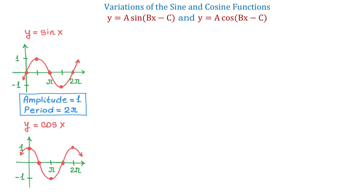In this video, we will talk about variations of sine and cosine functions: y equals a sine of bx minus c, and y equals a cosine of bx minus c. To the left, we have the graphs of basic sine and cosine functions, and they both have the same amplitude and the same period. The amplitude is 1 and the period is 2 pi. The amplitude shows the maximum value of the function, and the period tells us that on the interval from 0 to 2 pi, the function completes one full cycle.